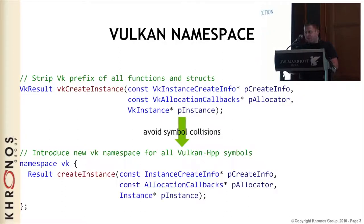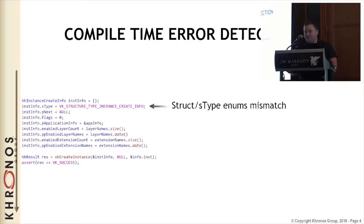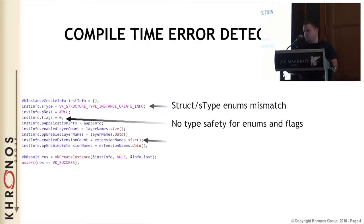This is about pure API changes. Next is compile time error detection. Look at the following piece of code - you might have seen something like this. A typical error is people forget the sType or they accidentally use a similar sType which is not the same, but you don't see it at compile time. You also don't have type safety for enums and flags - there are a few enums which are similar with regards to naming, and you might use the wrong enum and the compiler will not tell you.